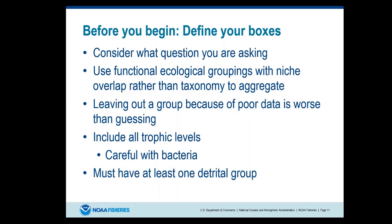It's a bit of housekeeping: you have to have at least one detrital group in your system so that things that die go somewhere and can be accounted for — once again, not being able to create or destroy energy in the system.